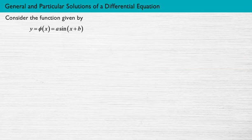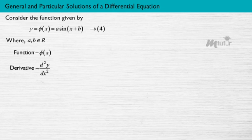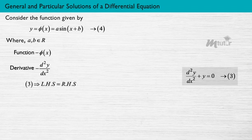Consider the function given by Y = φ(X) = A·sin(X) + B, where A and B belong to ℝ — name it equation 4. When this function and its derivative are substituted in equation 3, the left-hand side of the equation becomes equal to the right-hand side.